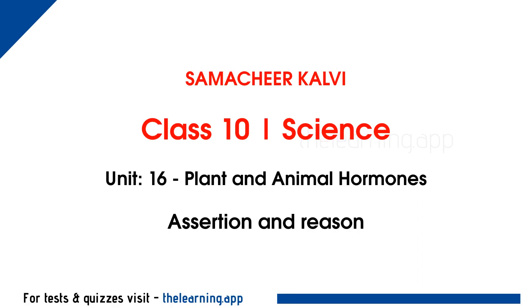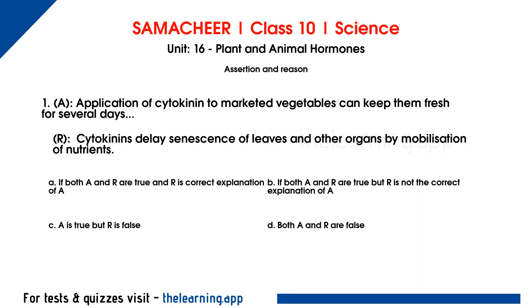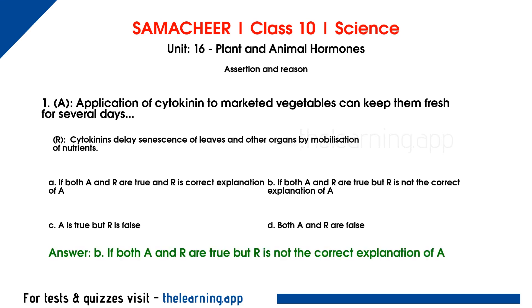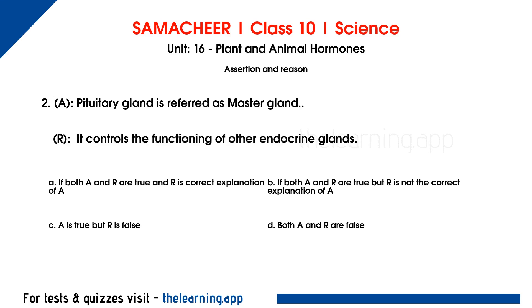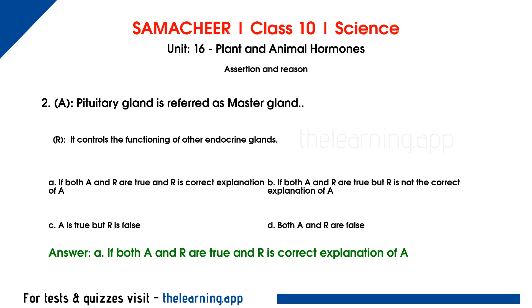Assertion and reason. First question. Assertion: Application of cytokinin to marketed vegetables can keep them fresh for several days. Reason: Cytokinin delays senescence of leaves and other organs by mobilization of nutrients. Correct answer is option B - both A and R are true, but R is not the correct explanation of A. Second question. Assertion: Pituitary gland is referred to as master gland. Reason: It controls the functioning of other endocrine glands. Both A and R are true and R is the correct explanation of A.